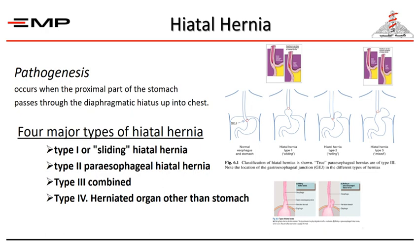Hiatal hernia is a major factor for development of gastroesophageal reflux disease. We have four types according to the site of the gastroesophageal junction. Normally the gastroesophageal junction lies below the diaphragm. If it slides into the chest, this is Type 1 — sliding hiatus hernia. In Type 2, the junction remains in the abdomen but the fundus herniates through the hiatus — this is paraesophageal hiatus hernia. Type 3 is the combined type. Type 4 involves herniation of an organ other than the stomach.